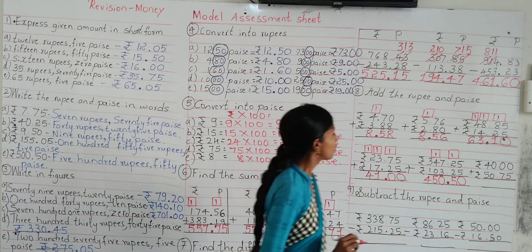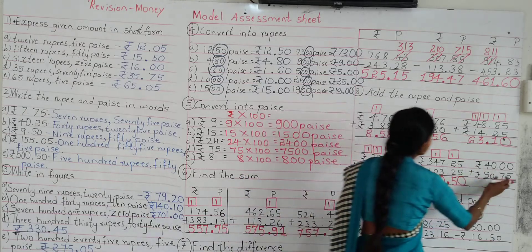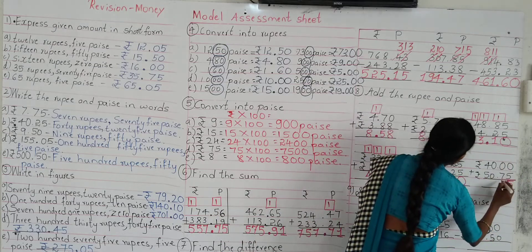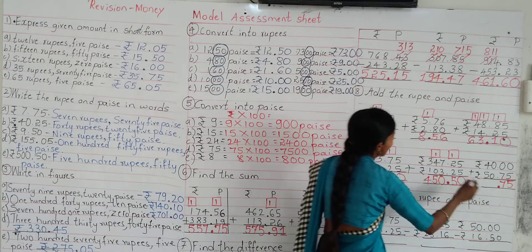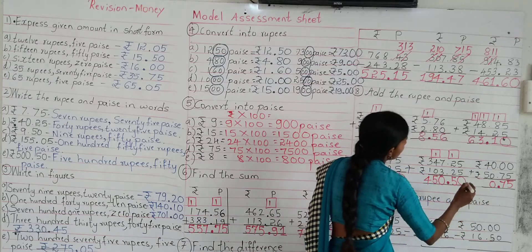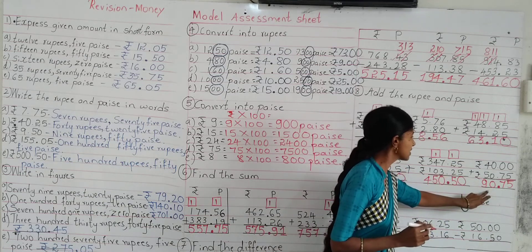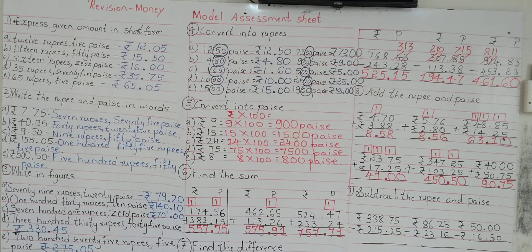Now look at the next example: rupees 40, 00 paisa plus rupees 50, 35 paisa. Add the paisa: 0 plus 5 is 5, write in the ones column; 0 plus 7 is 7, write in the tens column. Then insert the dot. Add the rupees: 0 plus 0 is 0, write in the hundreds column; 5 plus 4 is 9, write in the thousands column. So what is the sum? 90 rupees 75 paisa. When you want to add the given rupees and paisa, follow the rules of addition.